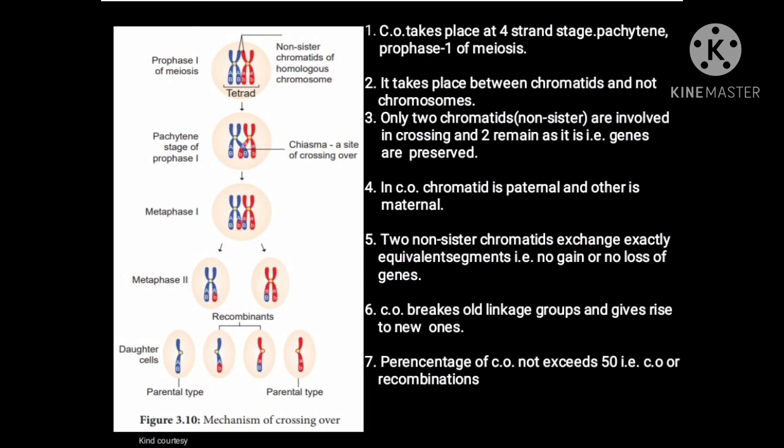In crossing over, one chromatid is paternal and the other is maternal. The two non-sister chromatids exchange exactly equivalent segments — there is no gain or loss of genes. Crossing over breaks the old linkage groups and gives rise to new ones. The percentage of crossing over does not exceed 50%, that is, the recombination frequency is at most 50%.